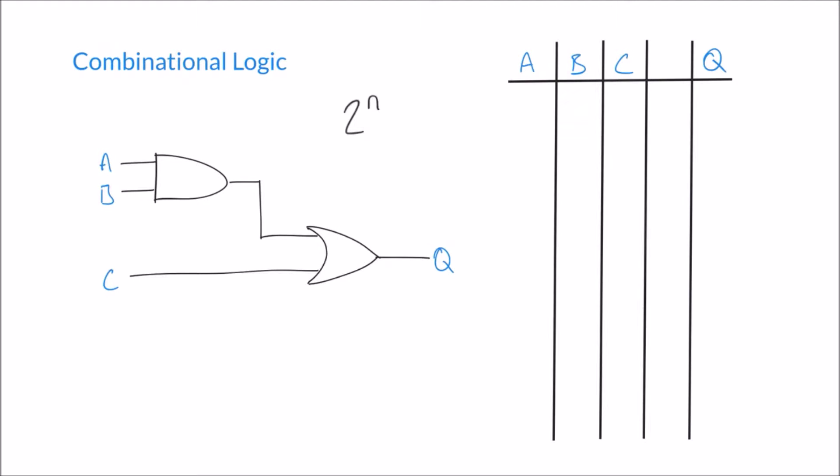And so here we have 3 inputs. 2 to the power 3 or 2 cubed is 8. So there's 8 possible combinations of inputs A, B and C that I want to fill out first of all in my truth table. Now a little tip to help you construct your truth table is what I call the half and half rule. Here's how it works.